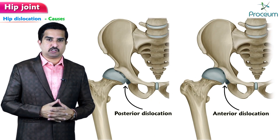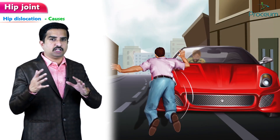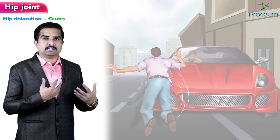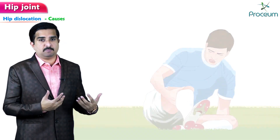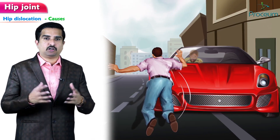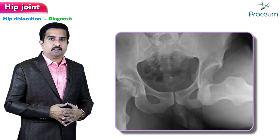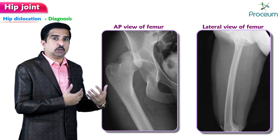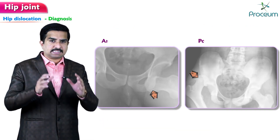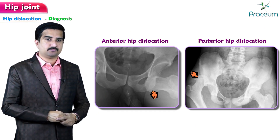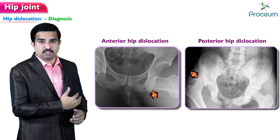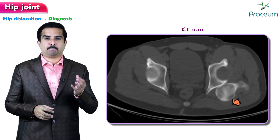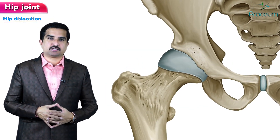Hip dislocations typically require a high degree of force. Approximately 65 percent of cases are related to motor vehicle collisions, with falls and sports injuries accounting for many of the rest — major causes include motor vehicle accidents and dashboard injuries. For diagnosis, anteroposterior X-rays of the pelvis and anteroposterior and lateral views of the femur including the knee are ordered. The size of the femoral head is compared across both sides of the pelvis — the affected femoral head appears larger if the dislocation is anterior and smaller if posterior. A CT scan may also be ordered to clarify the fracture pattern.